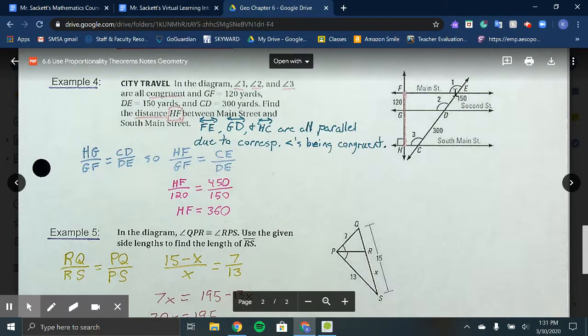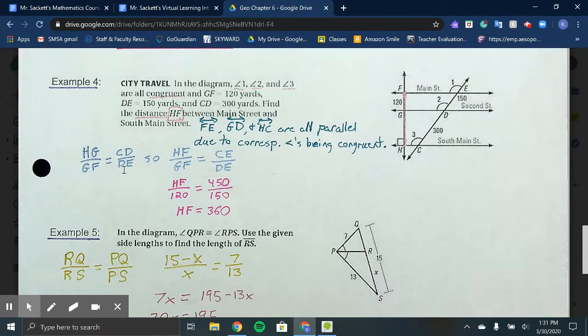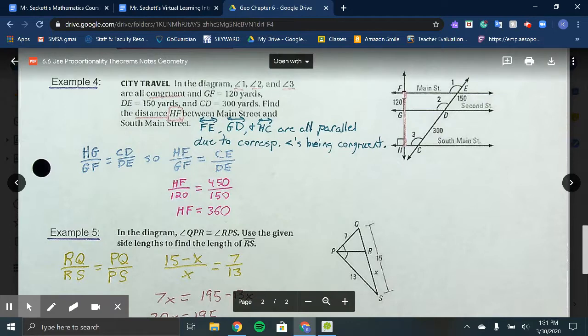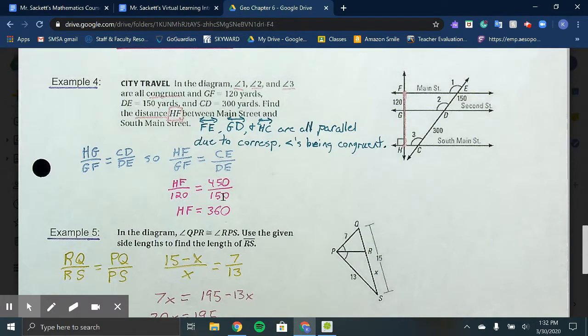In that case, HF over 120 equals 450 over 150. Cross multiply and divide, and HF equals 360.